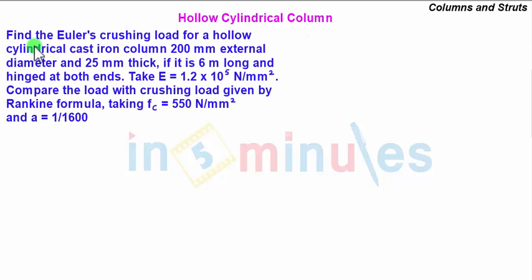Our problem statement is: find the Euler's crushing load for a hollow cylindrical cast iron column 200 mm external diameter and 25 mm thick if it is 6 meters long and hinged at both ends.